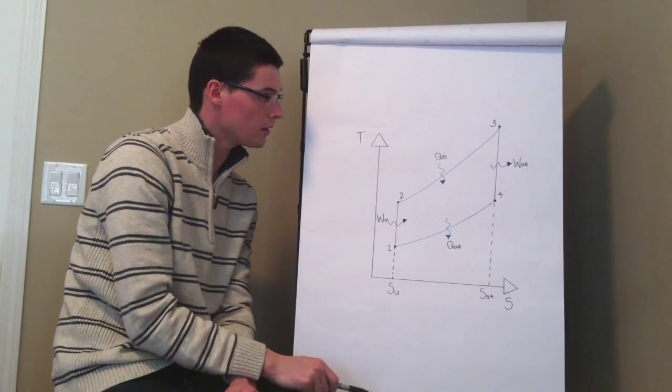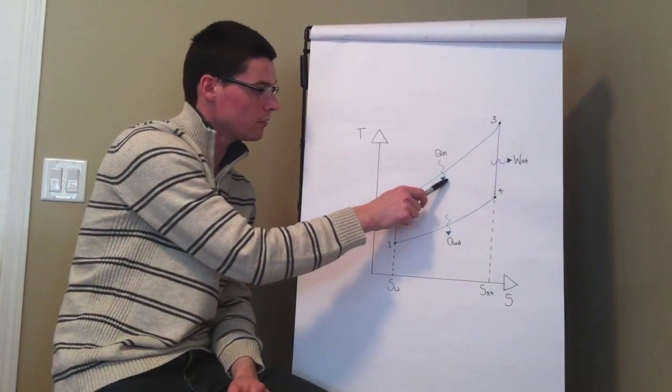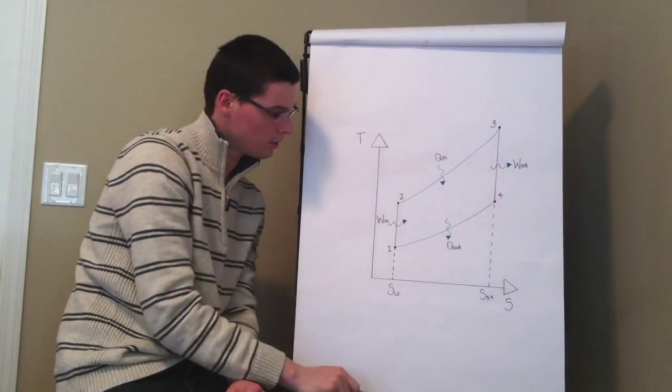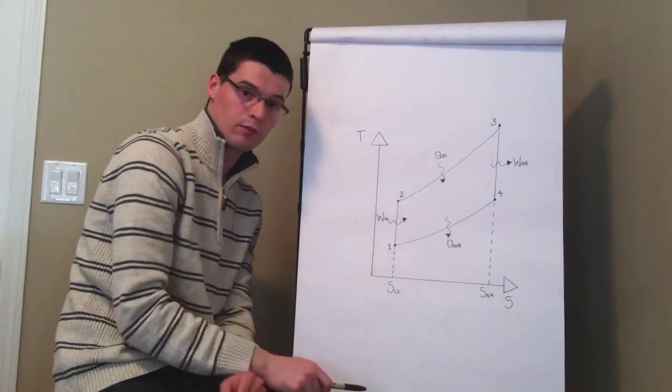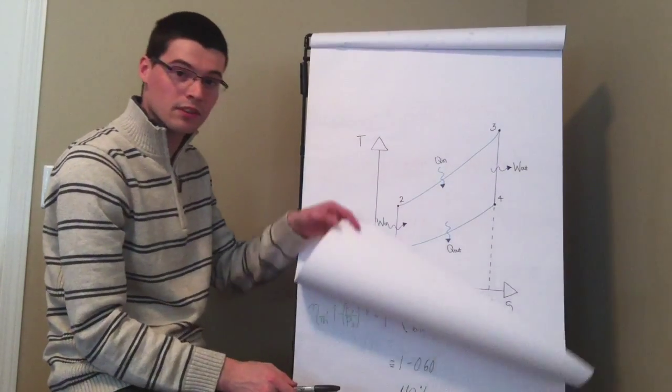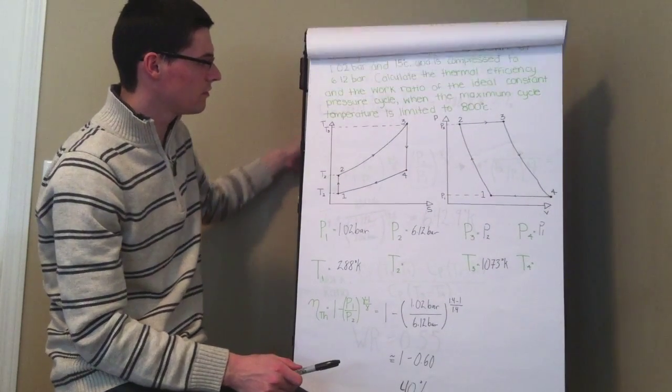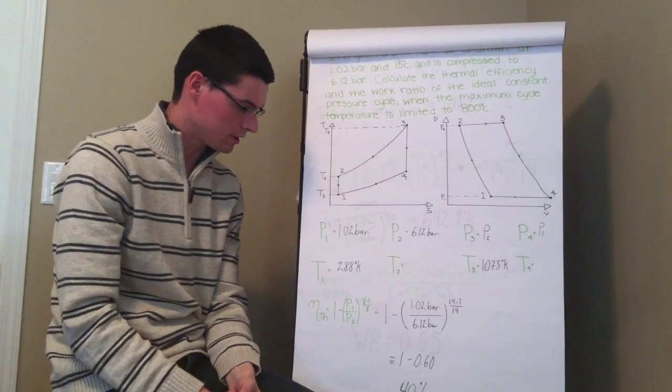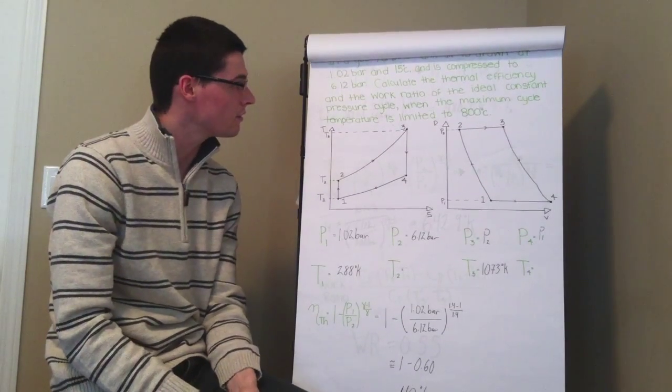Work in would be the compressor, heat in would be the combustor, work out would be the turbine and heat out would be the cooler. Now we will just go over an example to illustrate some of the formulas that would be associated with the Brayton cycle.